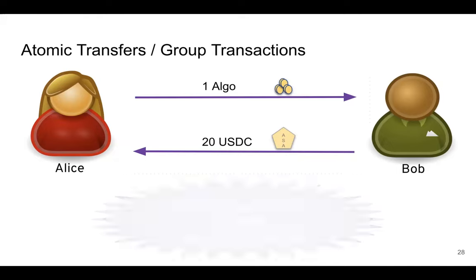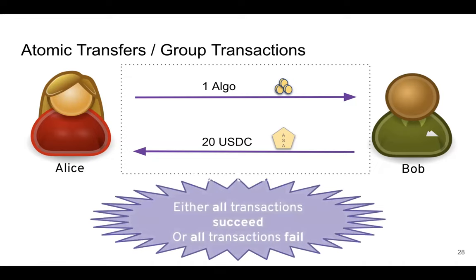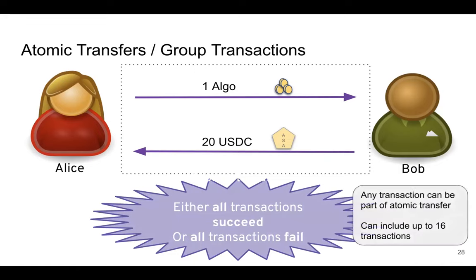To solve this, Algorand uses atomic transfers, also called group transactions. You can group these two transactions atomically, so either all transactions succeed or none of them succeed. It's not possible for one party to receive a token without sending theirs. The magic of atomic transfers is that they're not limited to two transactions, and not limited to transfers of value — they can also include smart contract calls.